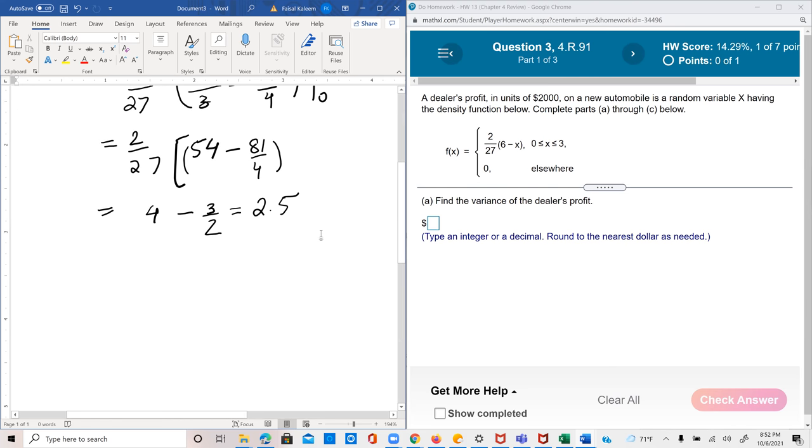So I get 2.5. And then E of x is needed. So that would be the integral of x against the fx, so 2 over 27, 6 minus x, from 0 to 3.